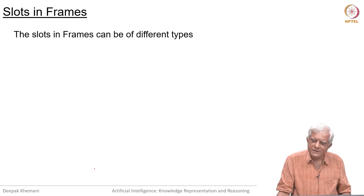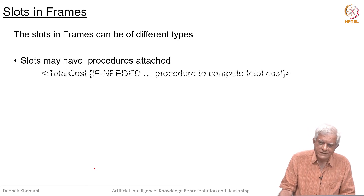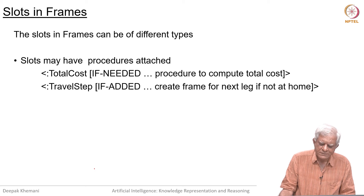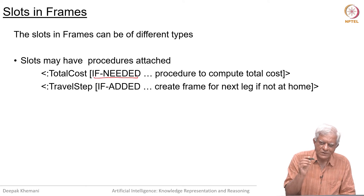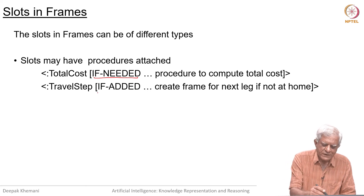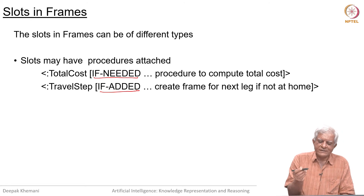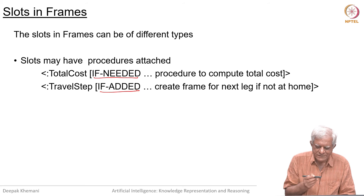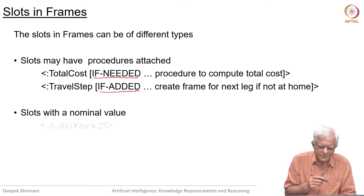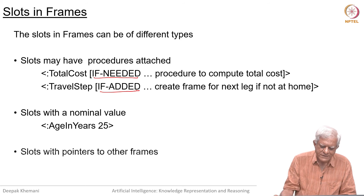The slots in a frame can be of different types. They may have procedures attached to them. For example, there might be an if-needed procedure, which means if you need the value of this attribute then run this procedure; or it could be an if-added procedure, meaning if you are adding a value for this slot then also do something else. Slots can have nominal values, such as age in years, or they can be pointers to other frames — for example, the owner is the individual Socrates.